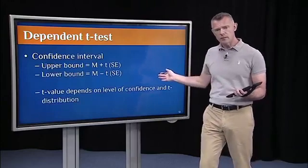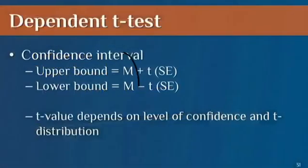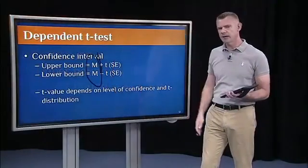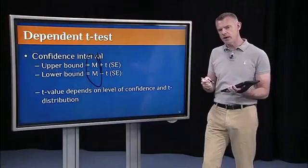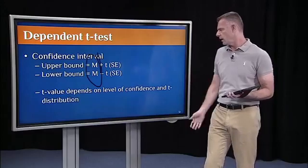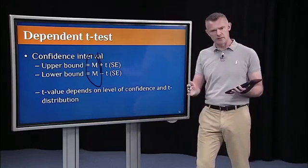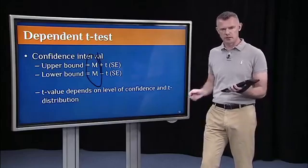We can get interval estimates around these means, rather than just point estimates. We could get the mean of the difference scores, but then put an upper bound and a lower bound on an interval. We get the upper bound and lower bound just like we did before when we were looking at confidence intervals for sample means or regression coefficients. We want to add some function of standard error. We multiply standard error by t. That exact t value depends on how confident we want to be, like a 95% confidence interval versus a 90% confidence interval, and it depends on which sampling distribution of t we're going to use, because we have that family of t distributions. So it depends on the number of subjects in the sample.